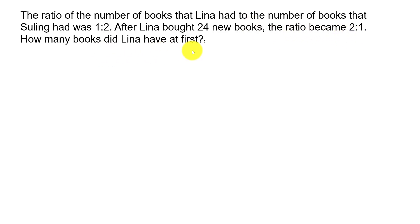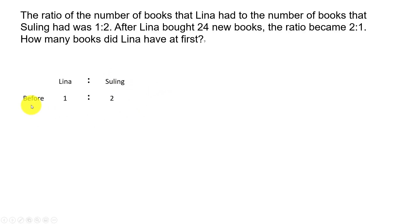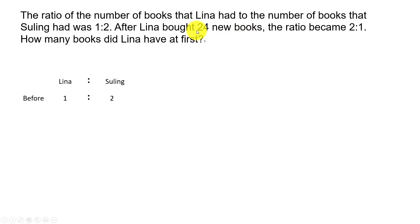How many books did Lena have at first? Let's take this one at a time. The ratio of the number of books Lena had to the number of books that Su Ling had was 1 is to 2 — that's the before ratio. So we can write them as 1 is to 2, representing Lena to Su Ling.